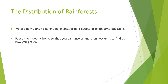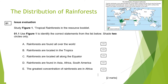We're going to have a go at answering a couple of exam style questions. I would suggest you pause the video to have a go at them yourselves and then restart it and we'll go through the answers. Remember in an exam you have about a minute per mark so it's a good idea to try and stick to this. The first question: study figure one — tropical rainforests in the resource booklet — use figure one to identify the correct statements from the list below. Shade two circles only. I've included the figure one map in the top corner. Pause the video and have a go.